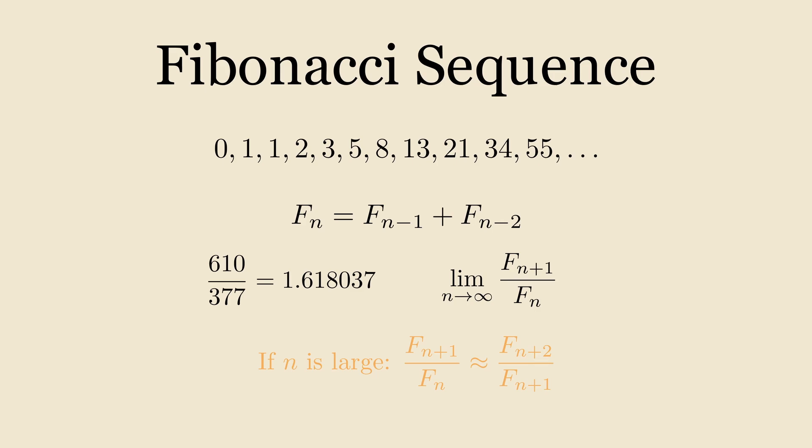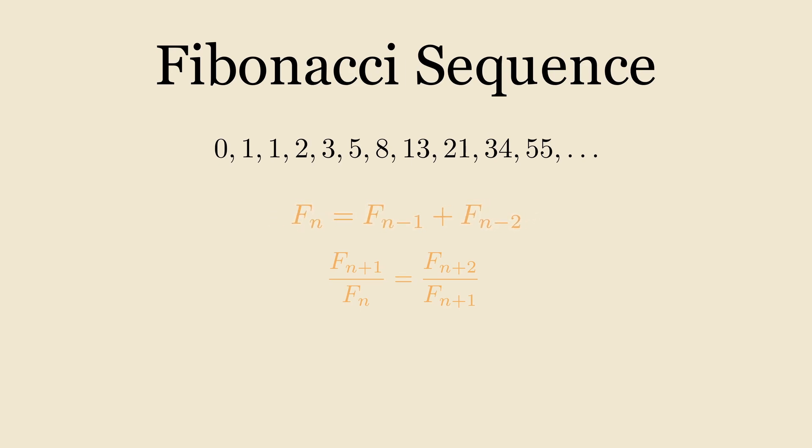Since we're dealing with the limit of n going to infinity, we can basically just say that these two ratios will be equal to each other. Now, to solve this further, we will use the recursive definition of a Fibonacci number. In particular, we'll use it on f n plus 2 to show that it's equal to f n plus 1 plus f n.